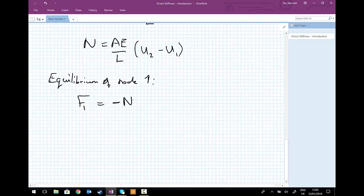So F1 must be equal to minus N. And we know from above that N was AE divided by L. So let's write that down. AE divided by L. And now we have the minus sign. So I'm going to change this term here in the brackets to take care of the minus sign is U1 minus U2.